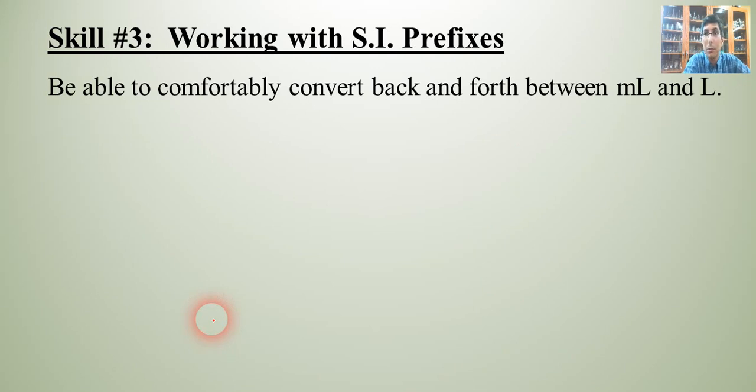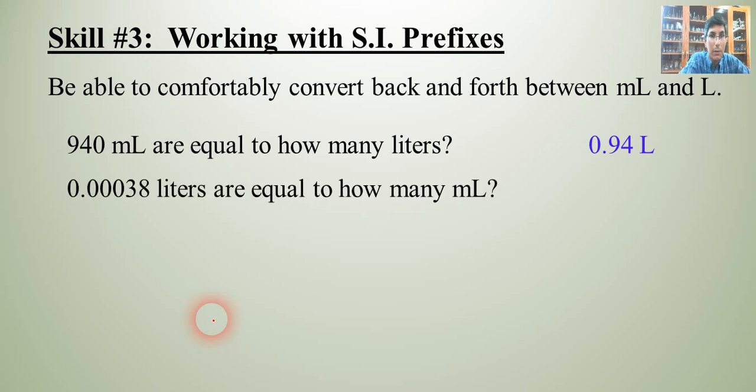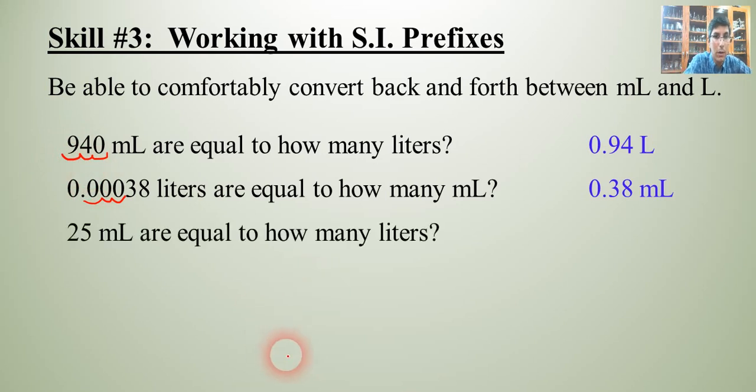Milliliters and liters. We use those a lot in the laboratory in the lecture as well. And so if we have 940 milliliters, I expect you very quickly to be able to divide that by a thousand and say that that's 0.94 liters. Okay, that should be just second nature to you. You should not have to drag out a calculator and do that. Or how about this one? We have 0.00038 liters. I would expect you to be able to multiply that by a thousand and get 0.38 milliliters. Okay, and for some students who may have forgotten, don't forget that to multiply by a thousand, you just move the decimal point over three places, 0.38. And then to divide by a thousand, you take the decimal point and move it to the left three places. Okay, 0.94. So this should just be second nature to you. It should not be anything very difficult.